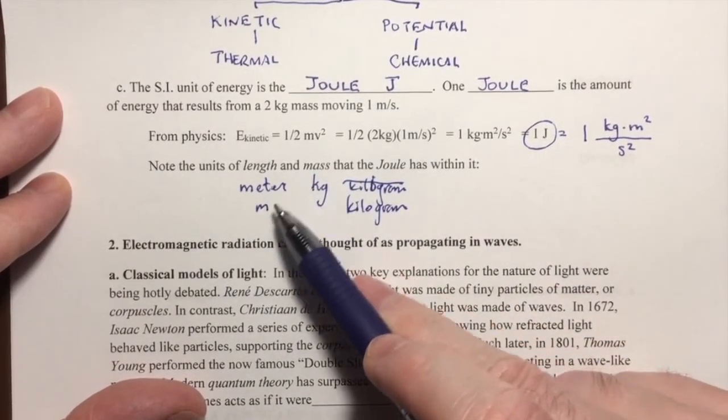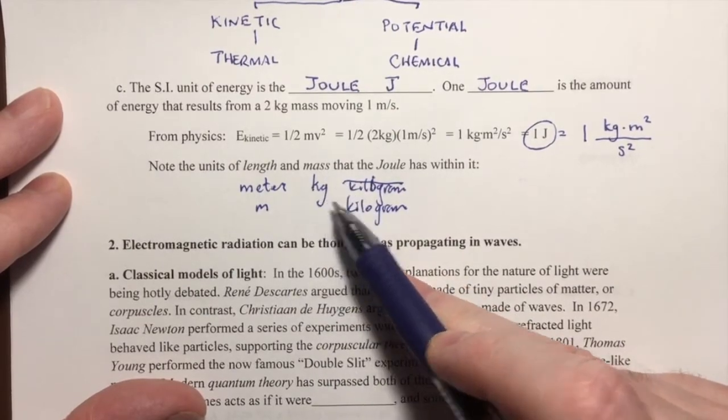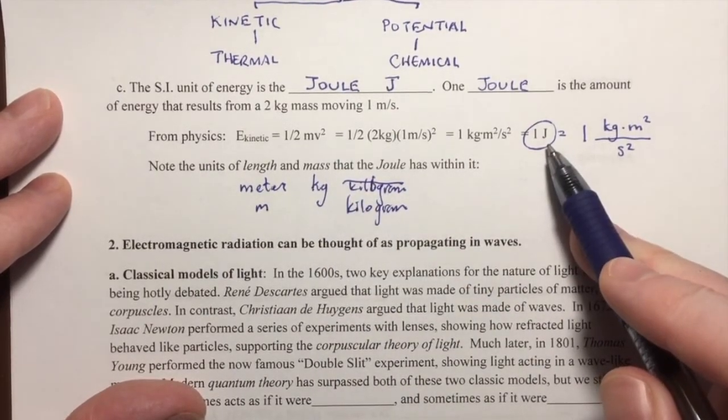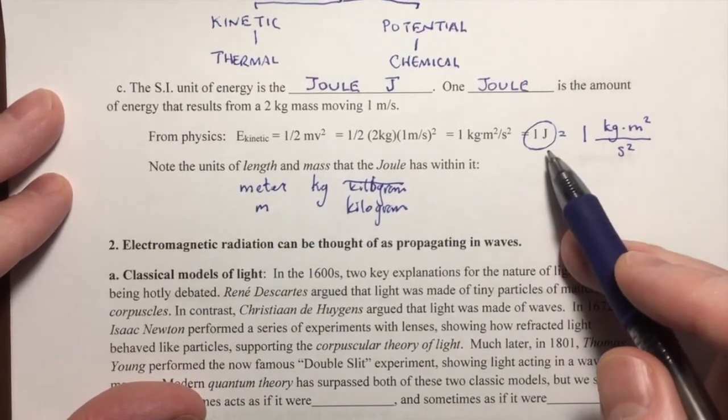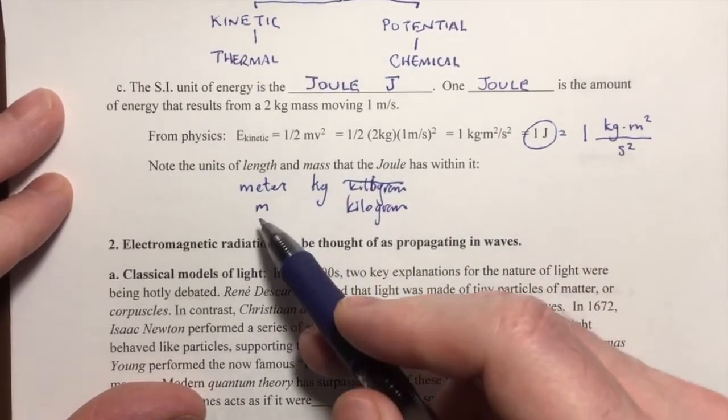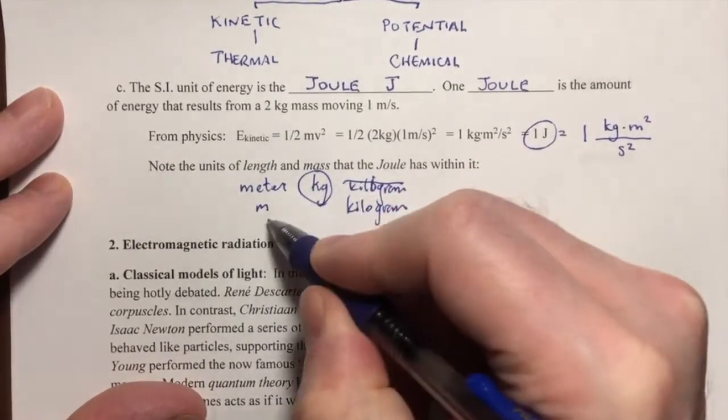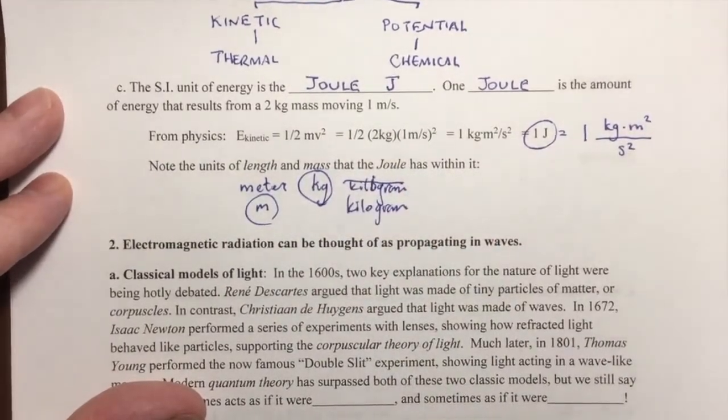So the length has to be in meters and the mass has to be in kilograms if you're doing joule conversions. We're going to be doing some math with joules here in a little bit. And I just want to point that out to you because we have to be in these units in order for our units to cancel.